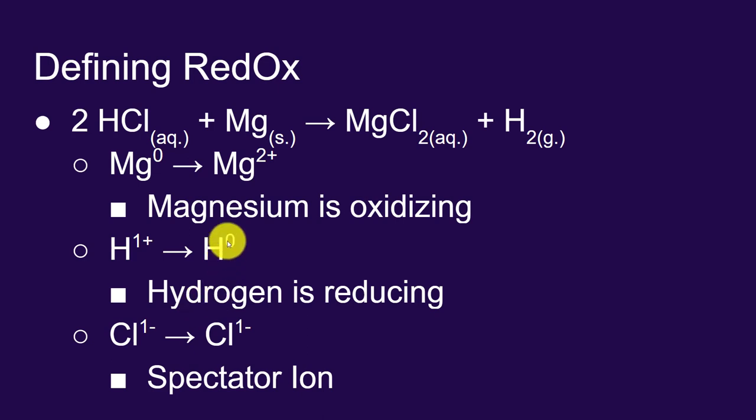The hydrogen was causing the magnesium to oxidize. So we would say the substance that contains the hydrogen, in this case the hydrochloric acid, would be the oxidizing agent. So hydrochloric acid is the oxidizing agent because it contains the thing that's being reduced.